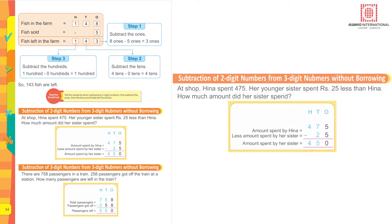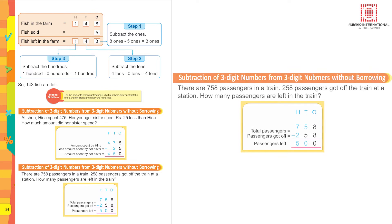Subtraction of two-digit numbers from three-digit numbers without borrowing. At a shop, Hina spent 475 rupees. Her younger sister spent 25 rupees less than Hina. How much did her sister spend? Write 475 at the top, then minus 25. Five minus five is zero, seven minus two is five, and four as it is. So the amount spent by her sister is 450 rupees.